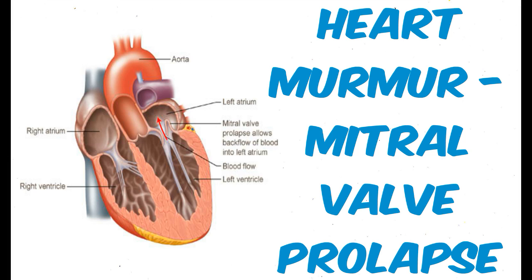In summary, mitral valve prolapse is the most common valvular disease in the United States, with an incidence of 2.4% in the population. The classic click murmur complex moves later with a squat maneuver and earlier with standing. Studies show that neither chest pain nor arrhythmias are more common in patients with mitral valve prolapse compared to matched controls. Patients at risk for valve replacement include men, those with elevated systolic blood pressure, increased left ventricular size, and mitral regurgitation. Mitral valve repair is available for the majority of patients who need surgery. Listen once again to the classic click murmur of mitral valve prolapse.